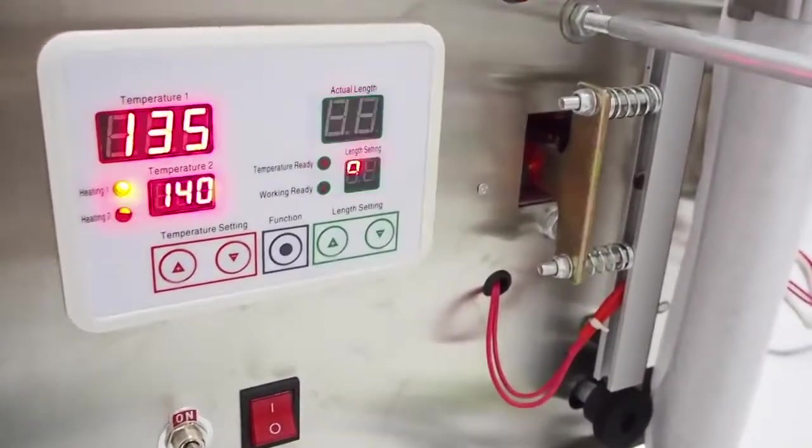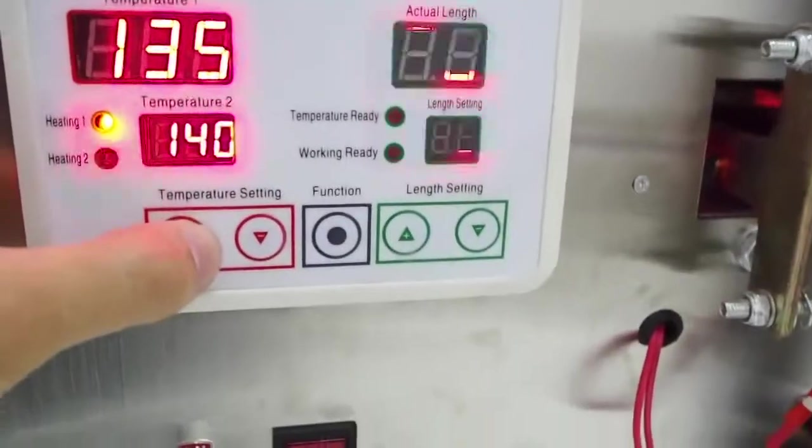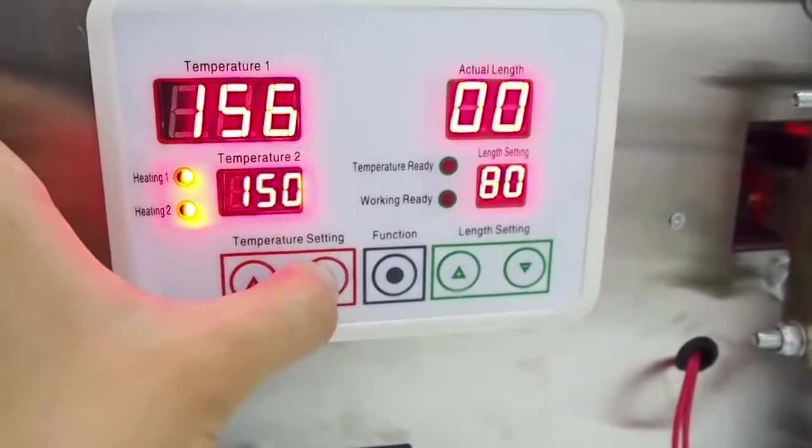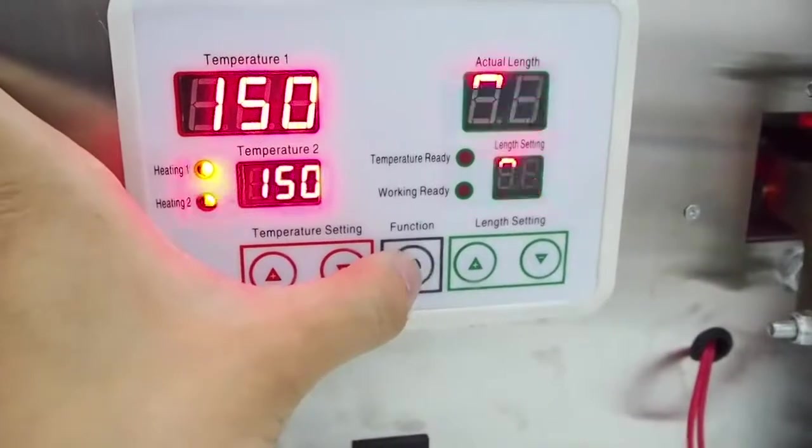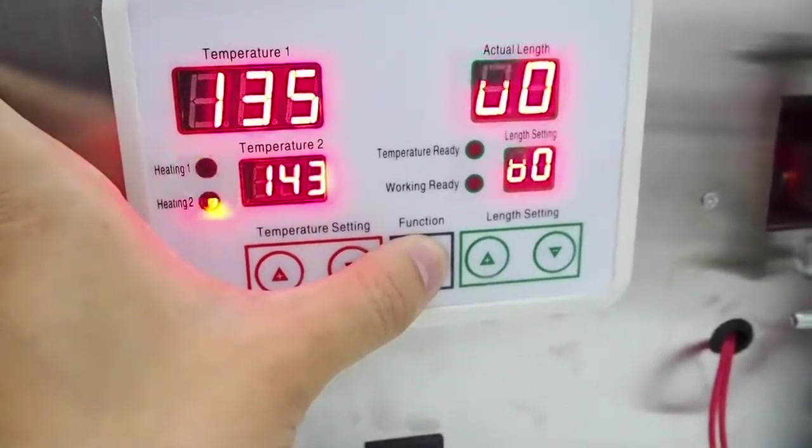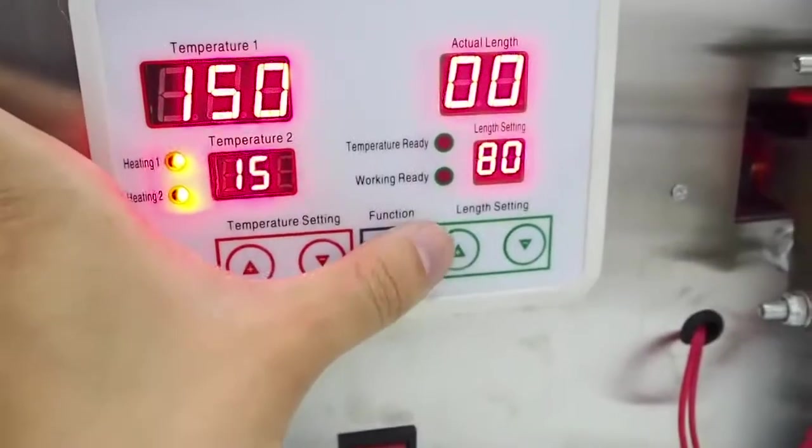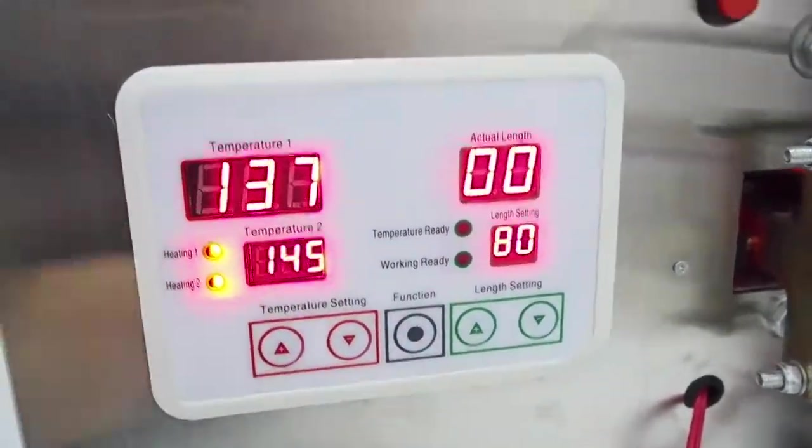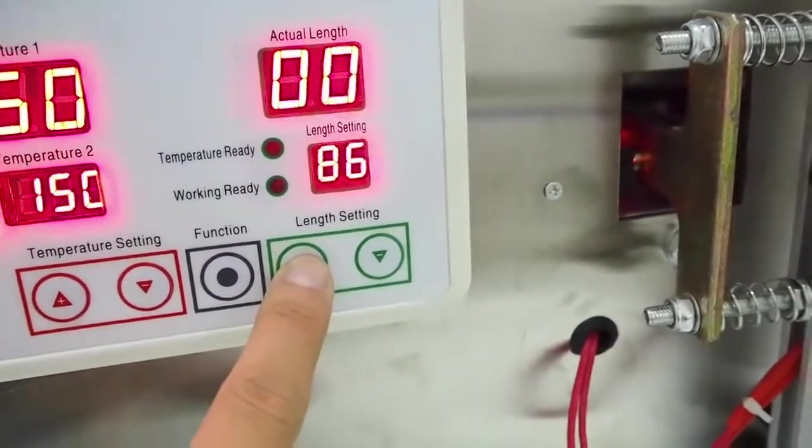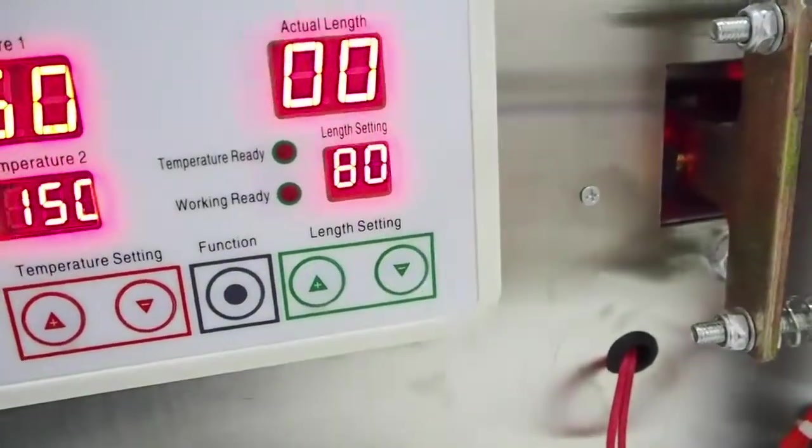As the machine is heating up, I'm going to take some time to explain the control panel here. Obviously this button here is for adding temperature, minusing temperature. Function button is to switch between two temperatures. Here we have length setting. Adding length, minus length. Let's set it to 80 millimeter.